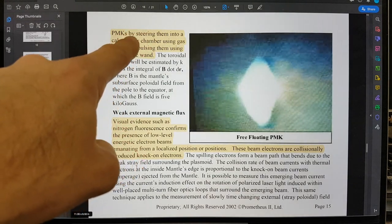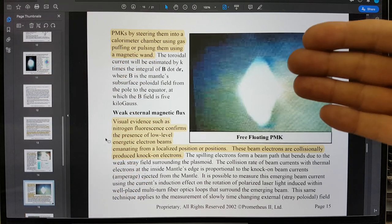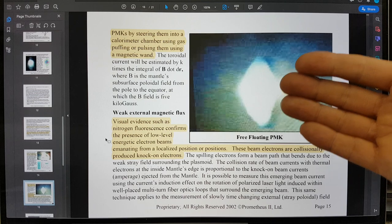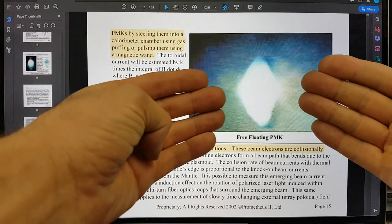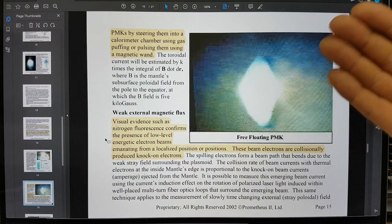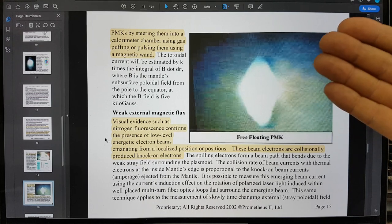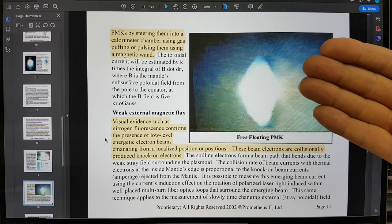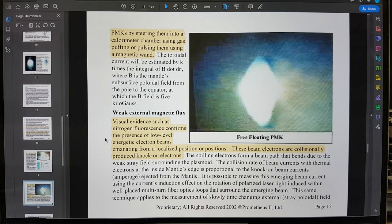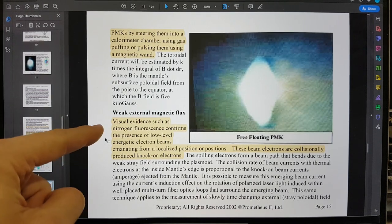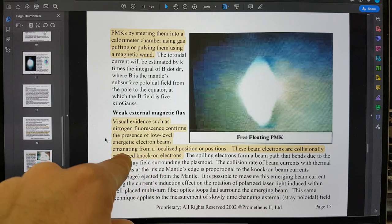On the next slide it says PMKs can be steered into the calorimeter chamber using gas puffing or pulsing them using a magnetic wand. These are able to be moved around by capacitive and magnetic ways. And also they suggest another way where you actually puff them because the atmosphere is relatively dense in their device, they can actually puff them. I think in a low pressure environment this would be not an option and you would be principally relying on capacitive and magnetic means of shifting the plasmoid into a cradle, as it were, the sort of thing that Shoulders discussed.